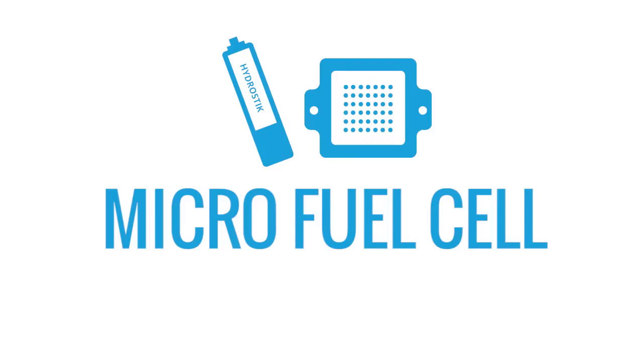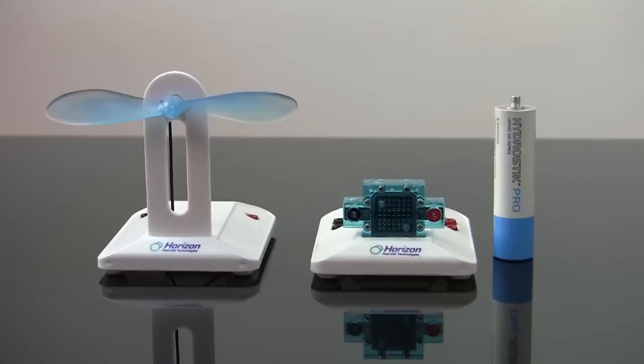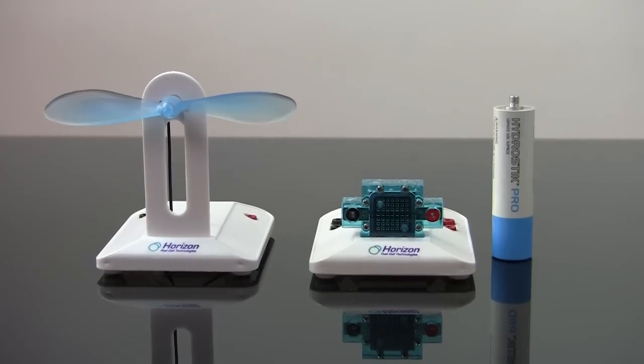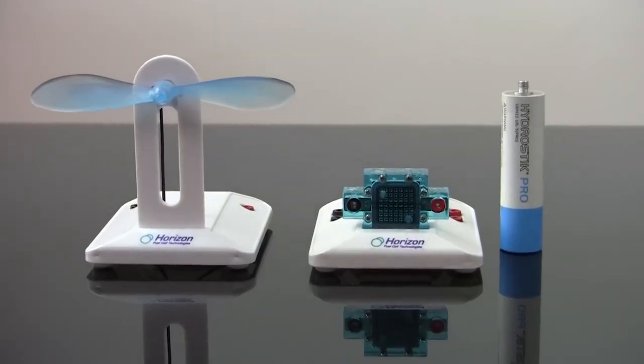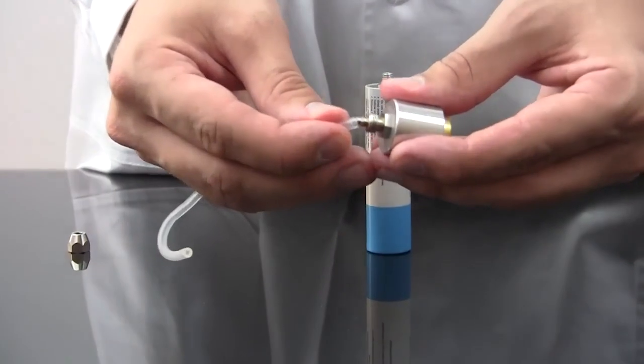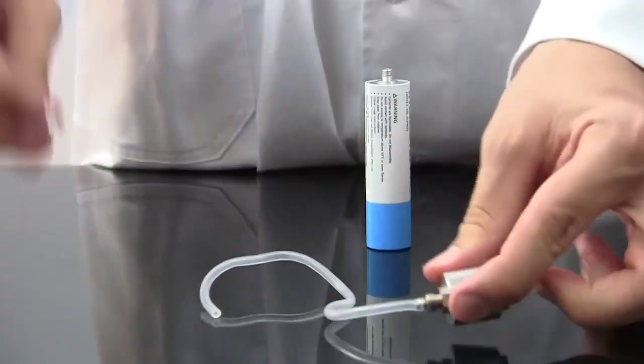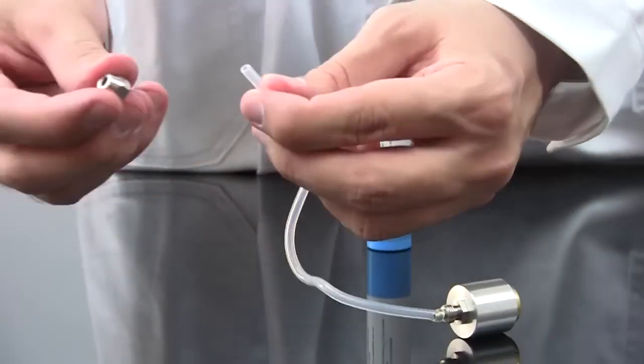The smaller micro fuel cell works in one direction, using hydrogen from a hydrostick cartridge instead of from splitting water. To use the hydrostick, simply attach tubing to the pressure regulator, securing it with the screw-on cap.